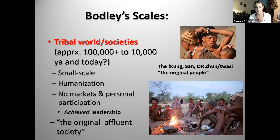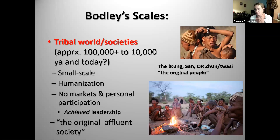They don't have markets — that's not how their economy works. Everyone participates personally in gathering food or whatever that may be. Everyone plays a role in decision-making, so no single individual makes decisions for the group. Leadership is achieved — you earn it through respect, charisma, making decisions that benefit everyone. Because it's achieved, it's reversible. If you stop making choices that are good for others, the group will simply stop listening to you.